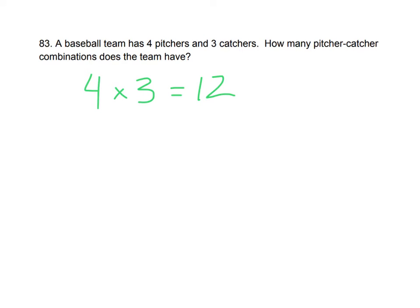Okay, so a baseball team has four pitchers and three catchers. How many pitcher-catcher combinations can they have? They can have 12. And that's really just simply four times three. So that one's not tough.